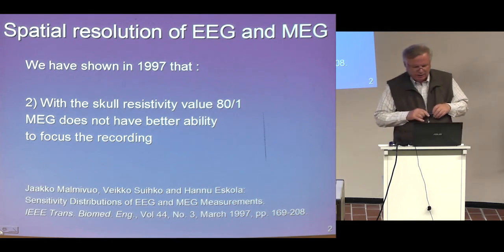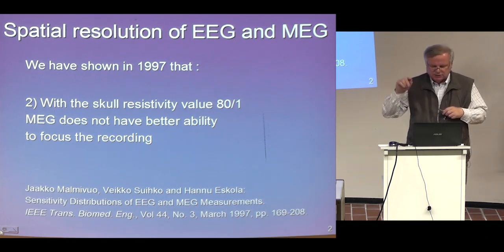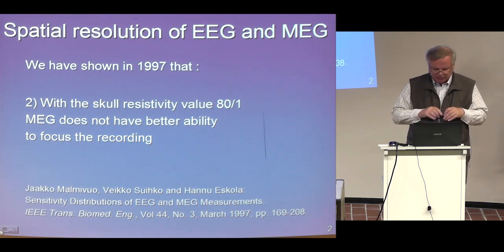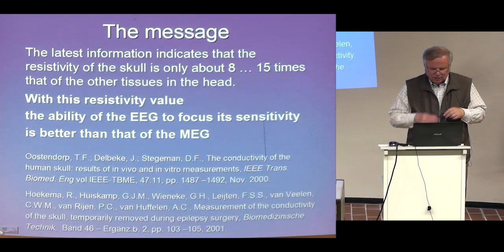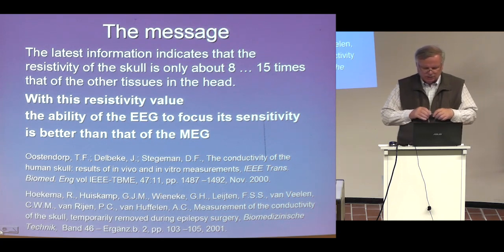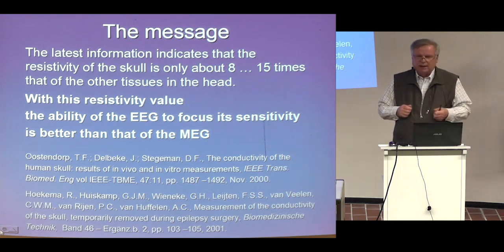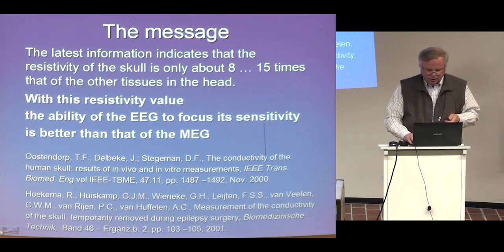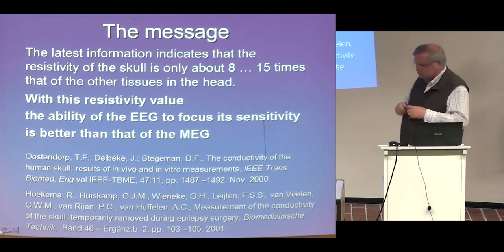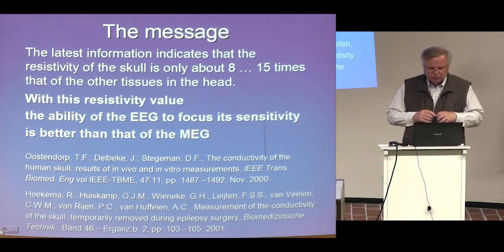We showed in 1997 that with the skull resistivity value of 80 to 1 — the Rush and Driscoll skull value — MEG does not have better ability to focus the recording, unlike what was believed. The latest information indicates that the resistivity of the skull is only about 8 to 15 times that of the other tissues in the head. With this resistivity value, the ability of EEG to focus its sensitivity is better than that of MEG.